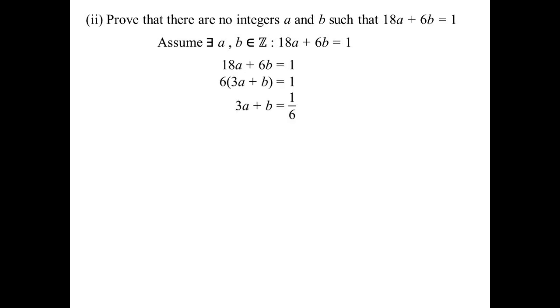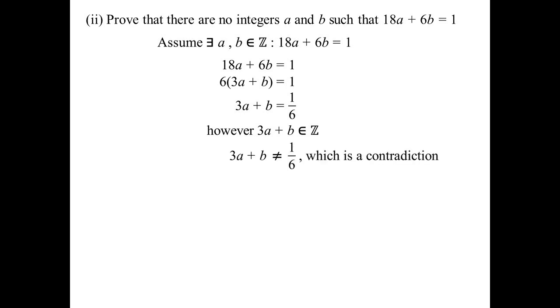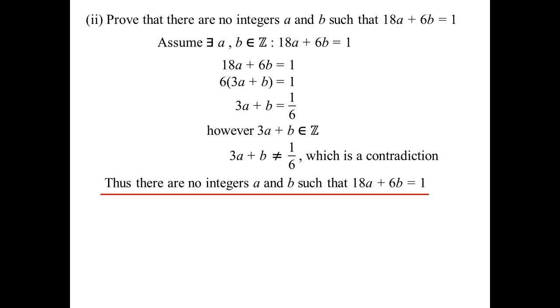Prove there are no integers A and B such that 18A + 6B = 1. Assume there do exist such integers A and B satisfying that equation. The expression has a common factor of 6, so pulling it out: 3A + B = 1/6. But 3A + B must be an integer since A and B are integers — yet we're saying it equals 1/6, which is not an integer. Contradiction: one line says it is an integer, another says it's not. Thus, there are no integers such that 18A + 6B = 1.